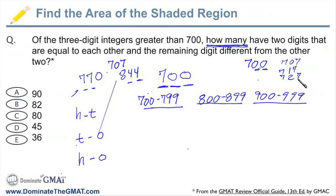How many of those are there going to be? 737, 747. There would be 10 of them.